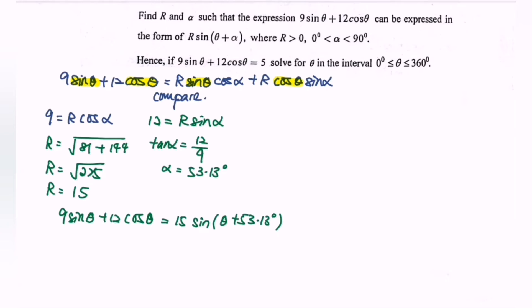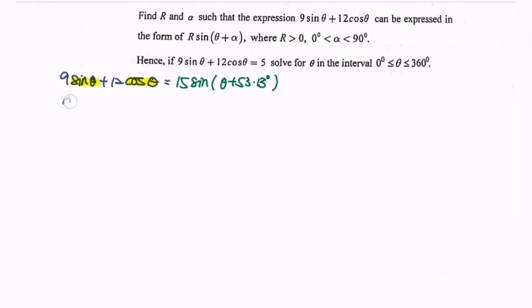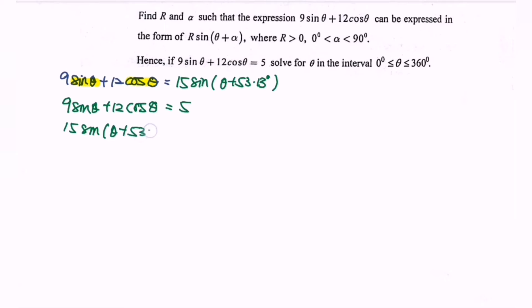Next, if 9sin(θ) + 12cos(θ) = 5, solve for θ in the interval 0° to 360°. Substituting our result gives 15·sin(θ + 53.13°) = 5.